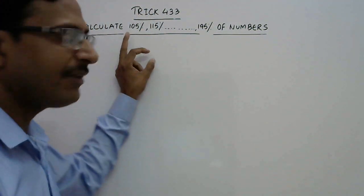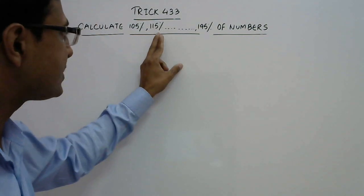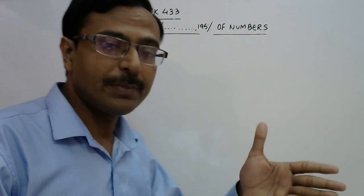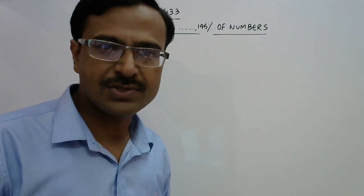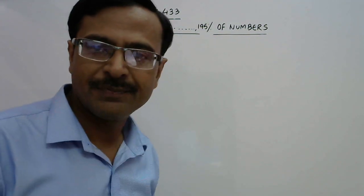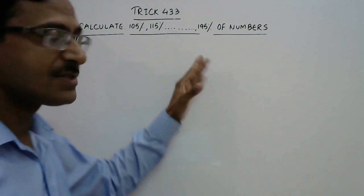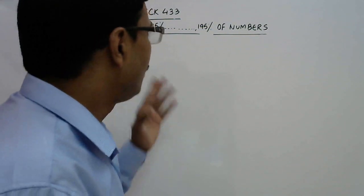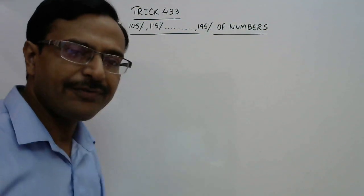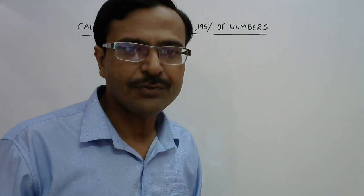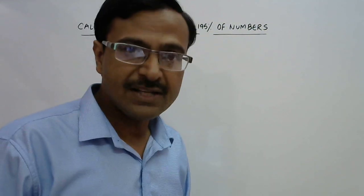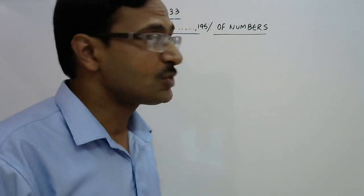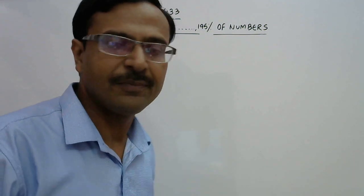Now we're going to find percentages above 100% ending in 5, like 105%, 115%, up to 195% and beyond 200%. In competitive exams, questions based on this shortcut appear frequently. To calculate all these percentages mentally within four to five seconds, we need to know 10% of a number — please see the playlist of percentage videos on the channel.